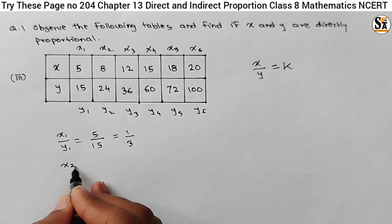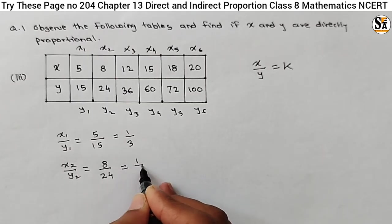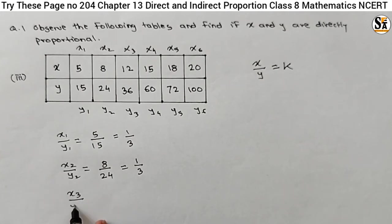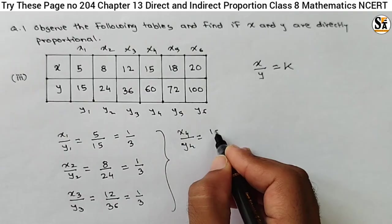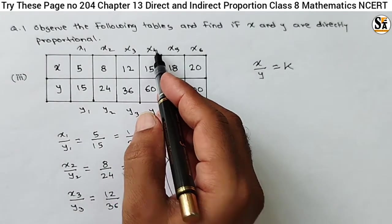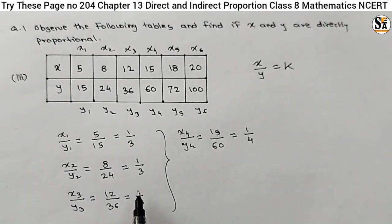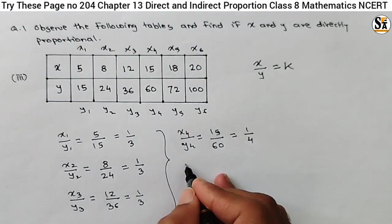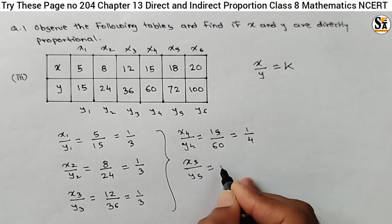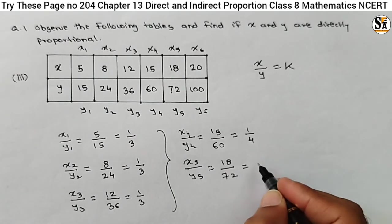Similarly, take the ratio for x2 and y2. x2 is 8 and y2 is 24. Again, 8, 3 are 24, so 1 upon 3. The ratio is 1 upon 3. Similarly, x3 upon y3: the ratio will be 12 upon 36, that is 1 upon 3. Similarly, we can find the ratio x4 upon y4. For the fourth value of x: 15 upon 60. The ratio will be 1 by 4. For the first three values the ratio is 1 upon 3, but for the fourth value the ratio is 1 upon 4. So let's find the next ratio: x5 upon y5, that is 18 upon 72, so it is 1 upon 4.